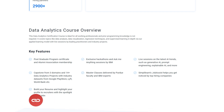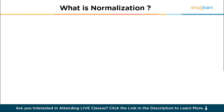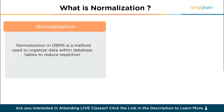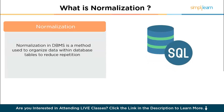So let's get started. Normalization in DBMS is a method used to organize data within a database to reduce repetition. By breaking down large data sets into smaller, more manageable tables and ensuring these tables are properly related, normalization helps prevent issues like data redundancy.